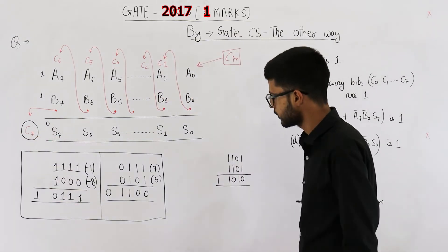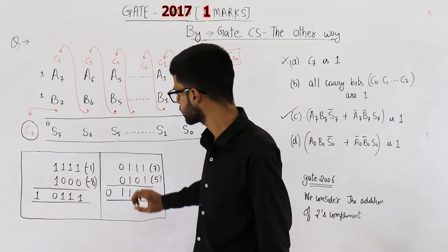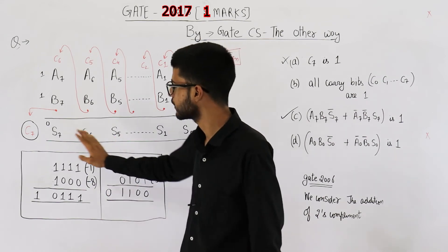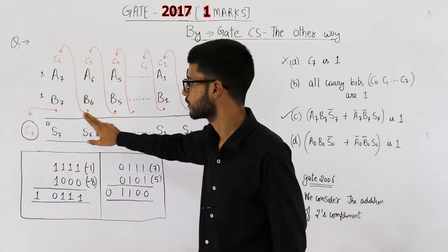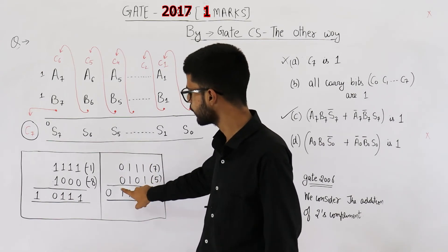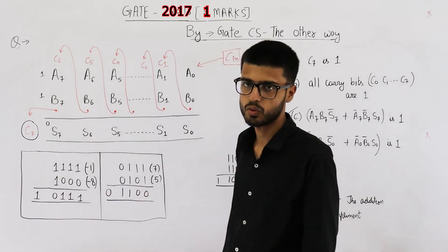So I can show you one example. See, in this case, there is an overflow. Even if the carryout is 0, the final carry of this entire addition is C7 or the carryout. In this case, the final carry of this addition is 0, still there is an overflow.